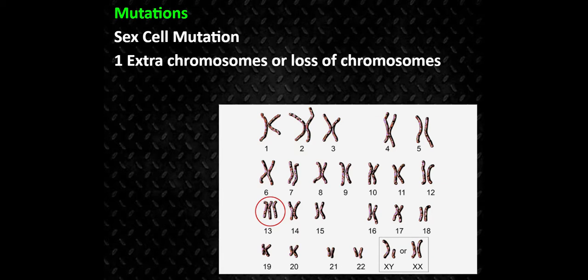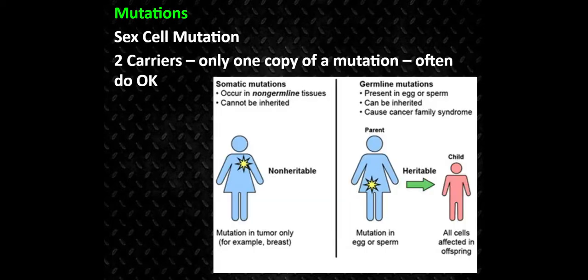There's the mutation type that is in the form, and there's also a mutation type that is in the number. Here you can see number six — there's three chromosomes there, and that is not correct. Here we can see the sex chromosomes: there's two options, an X and a Y, or two X's for male and female. Thanks for learning about chromosome mutations.